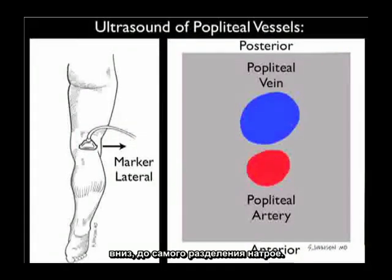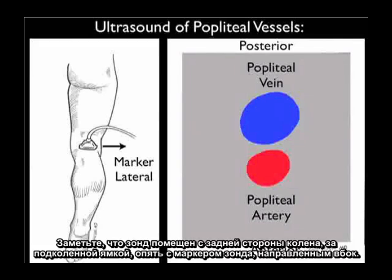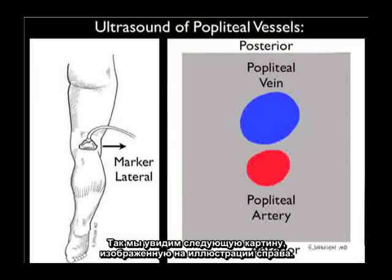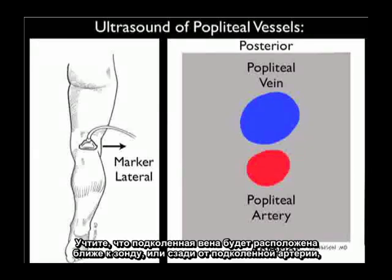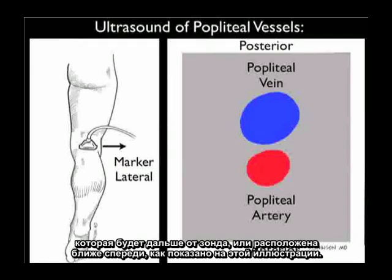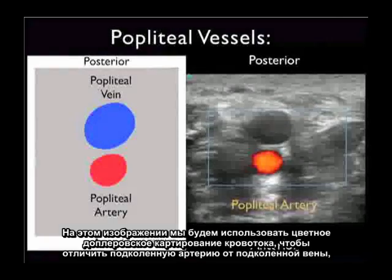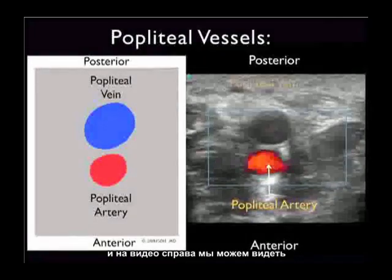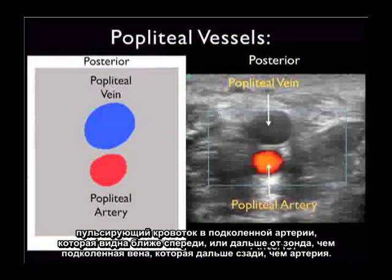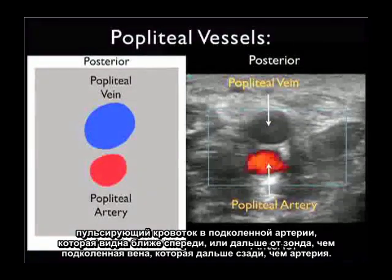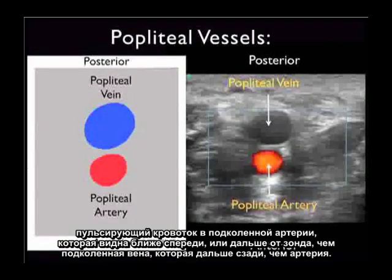With the probe placed into the posterior aspect of the knee within the popliteal fossa, marker dot oriented laterally, the popliteal vein will be located closer to the probe — posterior to the popliteal artery, which is further away or more anteriorly located. Using color flow Doppler, we can see the pulsatile flow of blood within the popliteal artery, anterior and further from the probe, and the popliteal vein seen more posteriorly with phasic flow.